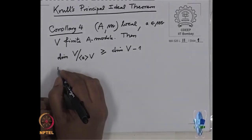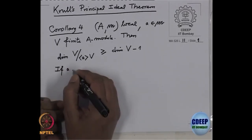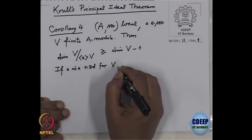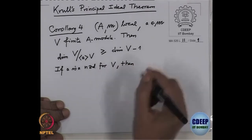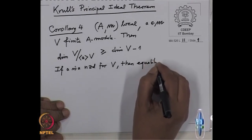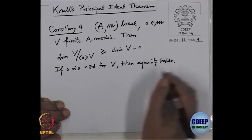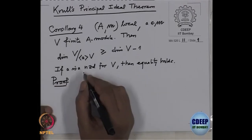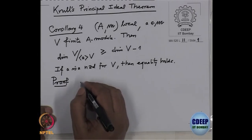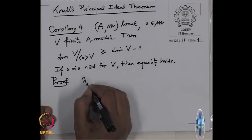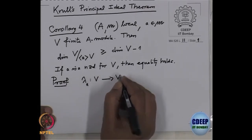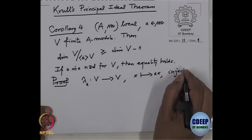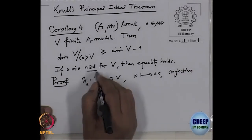What extra I want to add here is: if A is a nonzero divisor for the module V, then equality holds. For the proof, recall that when we say an element of a ring is a nonzero divisor for a module, that means left multiplication by A on V — any x going to Ax — this map is injective. That is the definition of when A is a nonzero divisor for V.